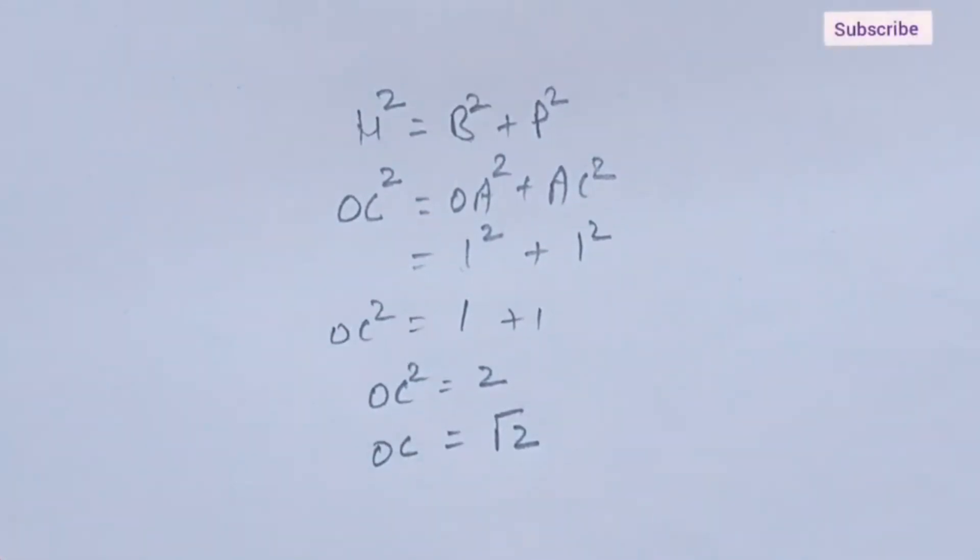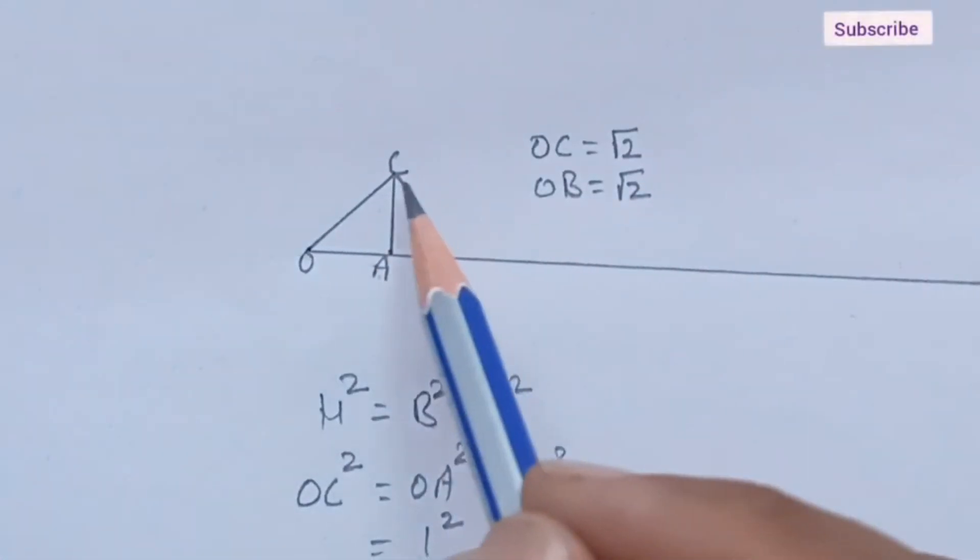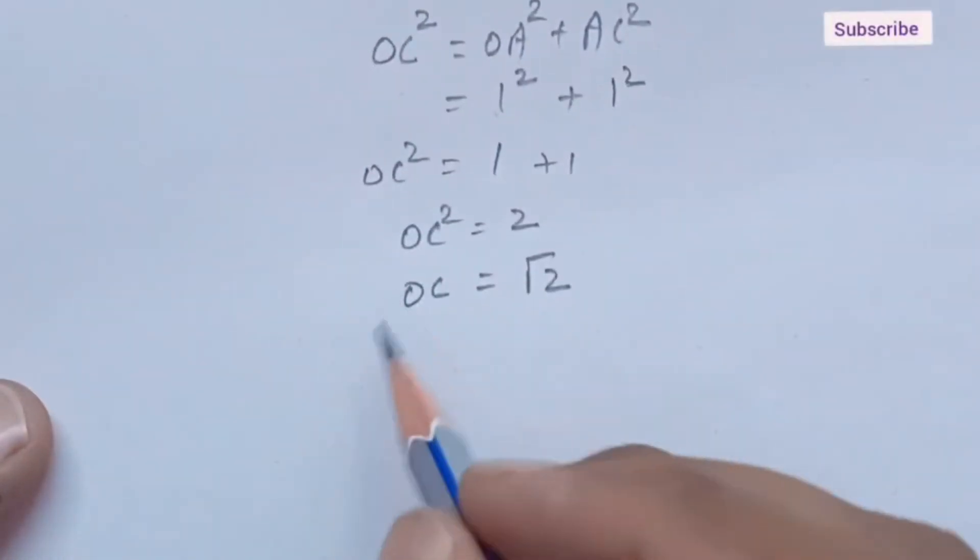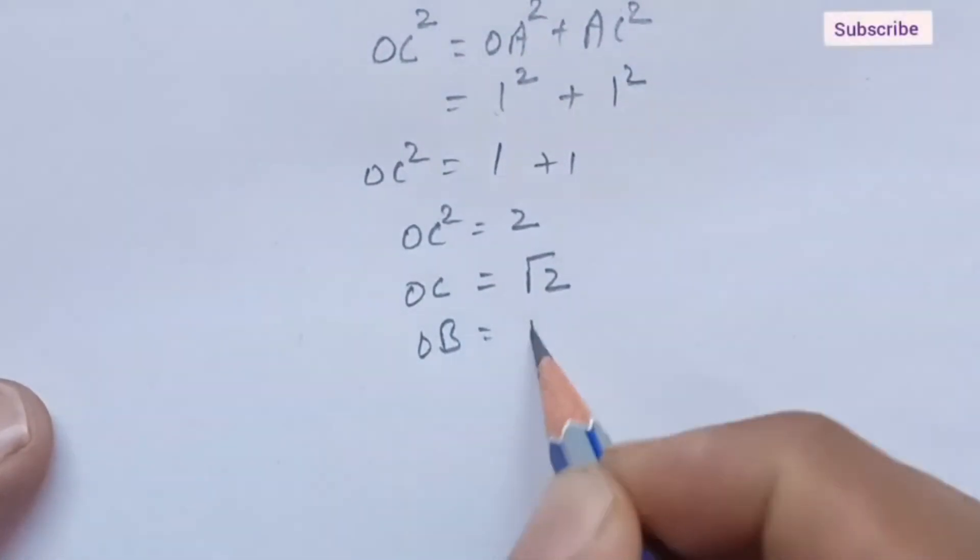So, OC is also equal to OB. So, OB is equal to under root 2.